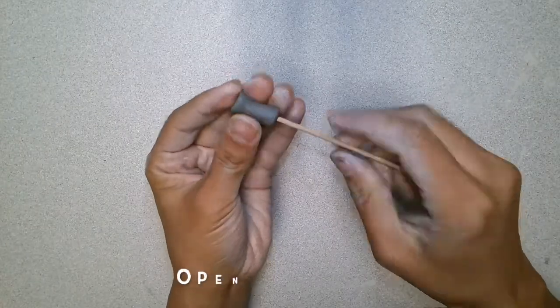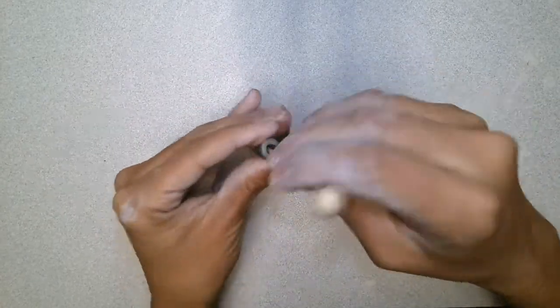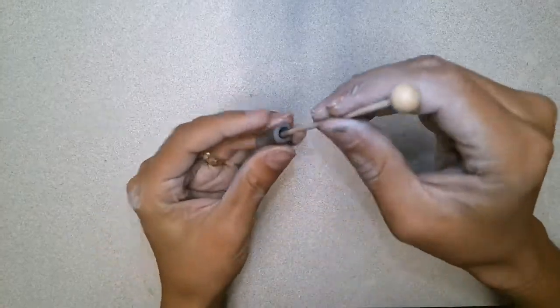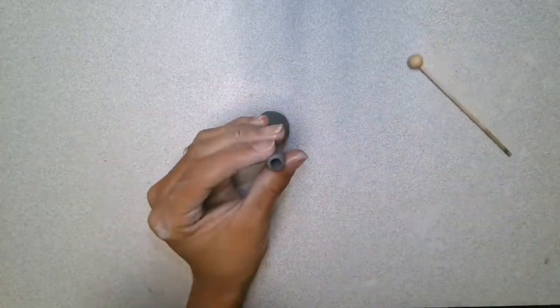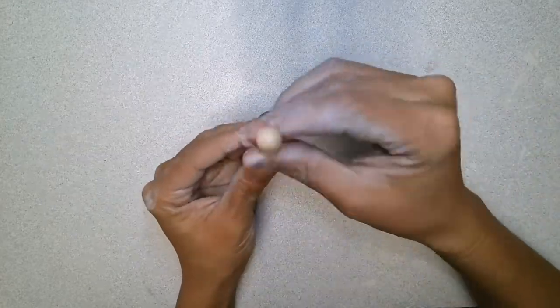Then poking through it with the stick end of my tool. I'll widen it by wiggling it around on both ends, and then I will attach it by scoring and slipping as always.